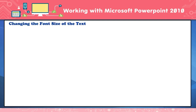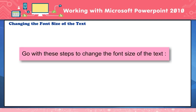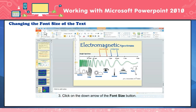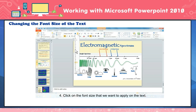Changing the font size of the text. To change the font size: select the text whose font size you want to change. Click on the Home tab. Click on the down arrow of the Font Size button. A drop-down list of various font sizes will appear. Click on the font size that you want to apply to the text.